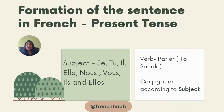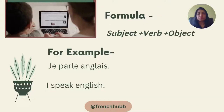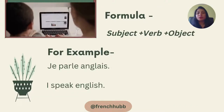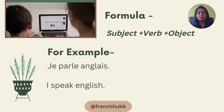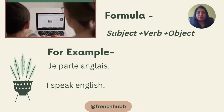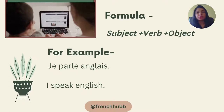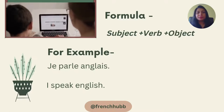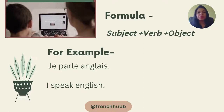For example, we are using the verb parler, which means to speak. We need to conjugate this verb according to the subject. Let's see the formula for making a sentence: subject — that is je, tu, il, elle, nous, vous, elles — plus verb.